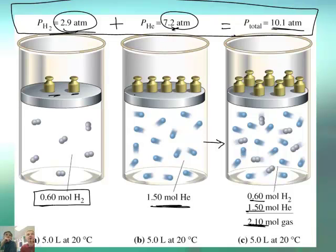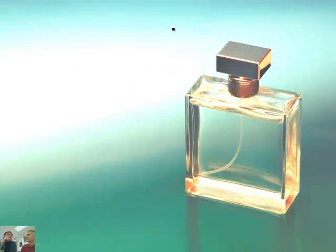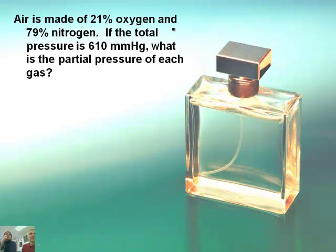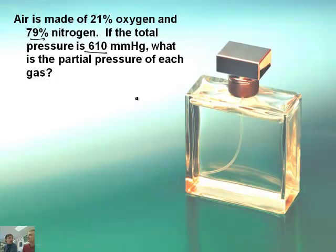Same volume and same temperature — that's important. If you change the temperature or the volume, it will change the values. I think we should do one example here. Air is made of 21% oxygen and 79% nitrogen. If the total pressure is 610, what is the partial pressure of each gas?